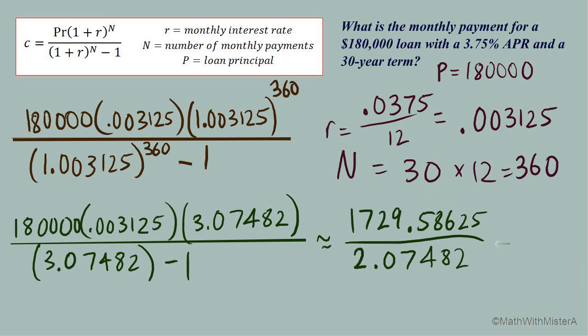And then lastly we can divide this through and that will give us our monthly payment and it equals about $833 and when I round 61 cents.